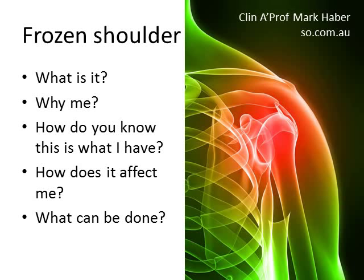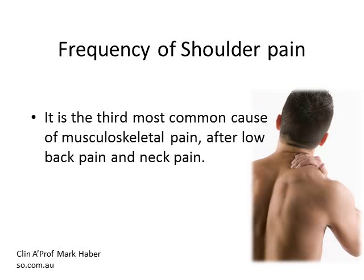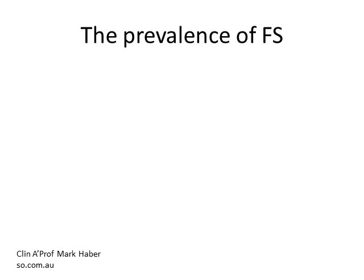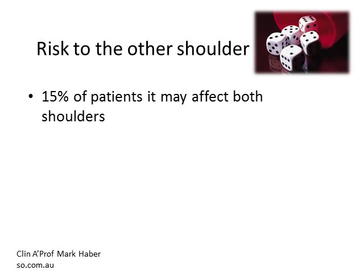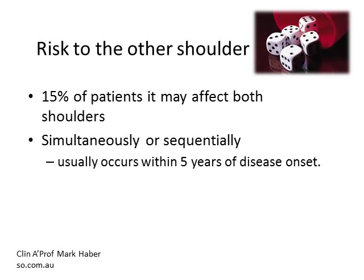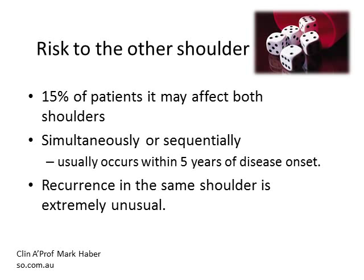Shoulder pain is very common and is indeed the third most common cause of musculoskeletal pain after low back pain and neck pain. Frozen shoulder is a very common cause of shoulder pain and affects 2% of the general population. 11% of diabetics get a frozen shoulder, and type 1 diabetics who are insulin dependent have a 40% chance of developing a frozen shoulder. However, most people who develop a frozen shoulder are not diabetic at all. There is a 15% chance it will affect both shoulders — simultaneously or sequentially, usually within 5 years of onset from the first shoulder. Interestingly, recurrence in the same shoulder is extremely unusual.